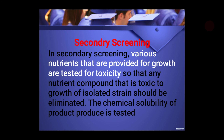In secondary screening, once you have isolated an organism with the capacity to produce your desired product, you go for formalization — finding what nutrients are needed for the growth and multiplication of this organism. Various nutrients provided for growth are tested for toxicity, so any nutrient component toxic to the isolated strain is eliminated. Secondary screening involves media formulation — what components can be given, what should not be given — and also checking chemical solubility of the product produced.